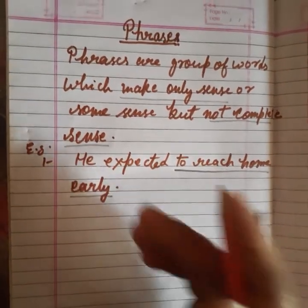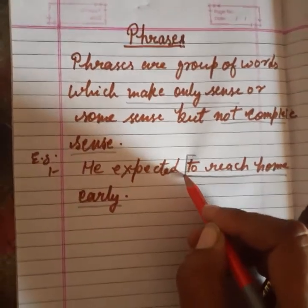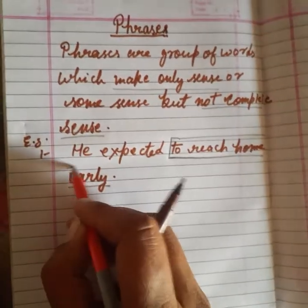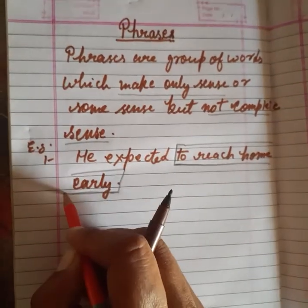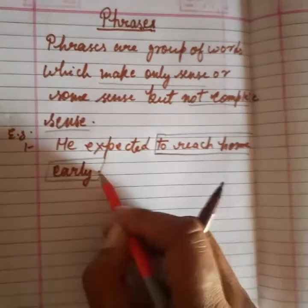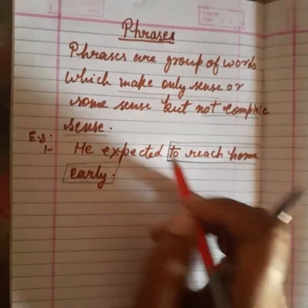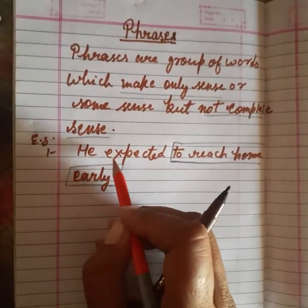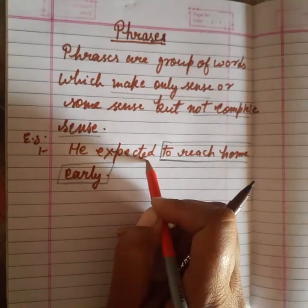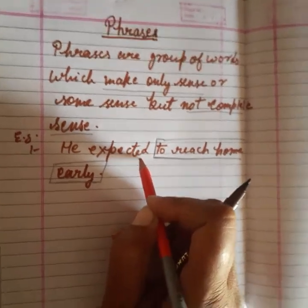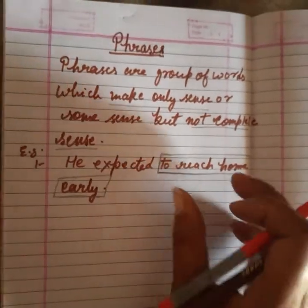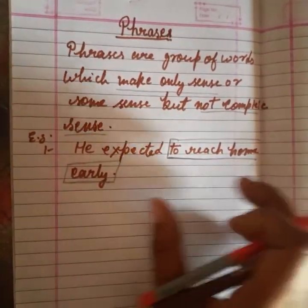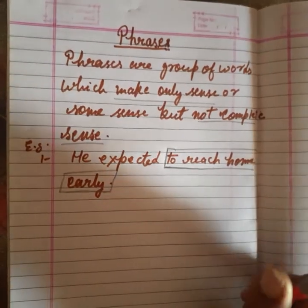इसका मतलब है कि इसका कुछ sense तो है, only some sense, but it is not giving complete sense. और यह sense कब पूरा होगा जब हम इसके आगे 'expected' लगा दें। तो इतना portion — 'to reach home early' — यह phrase में आएगा।